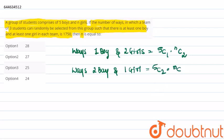Therefore, we have been given that total ways is 1750. Therefore, total ways is 5C1 into nC2 plus 5C2 into nC1 equal to 1750.